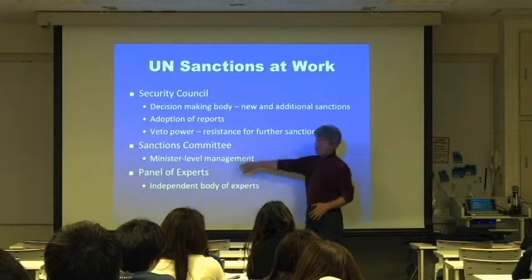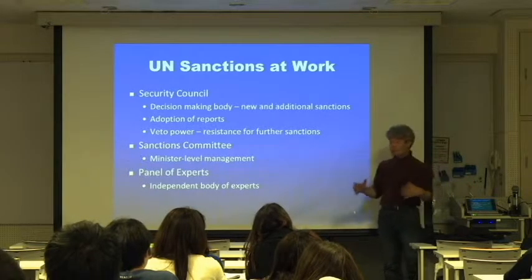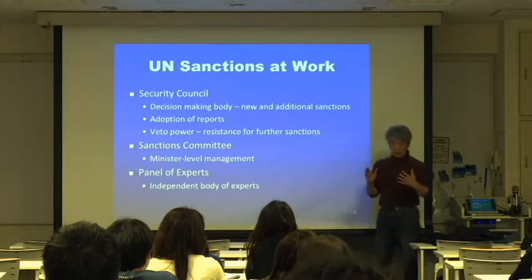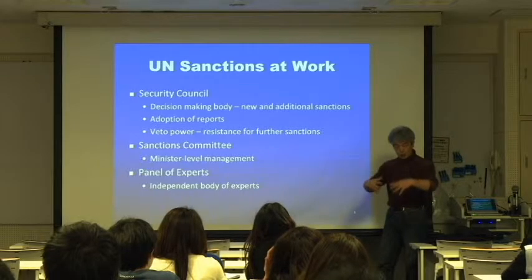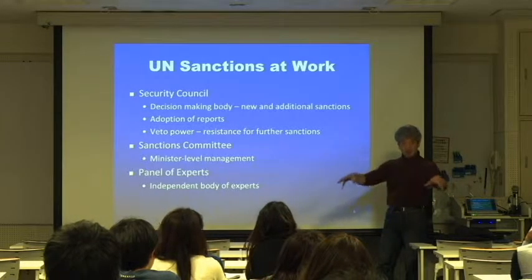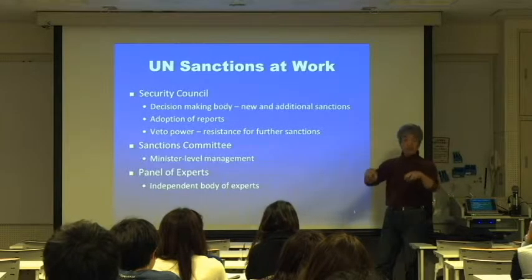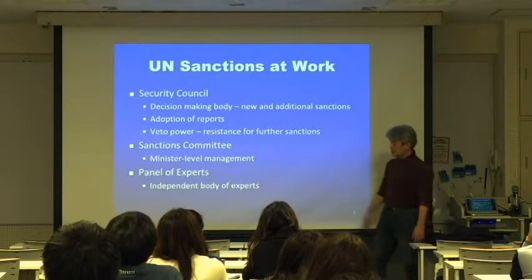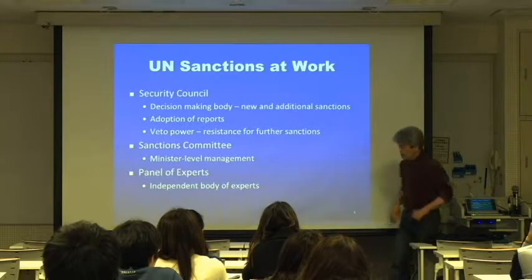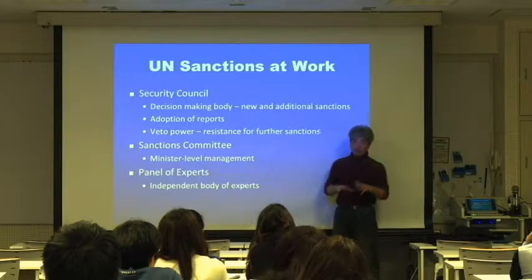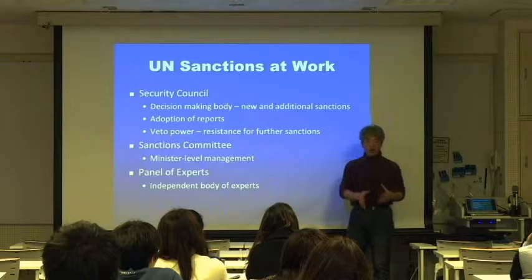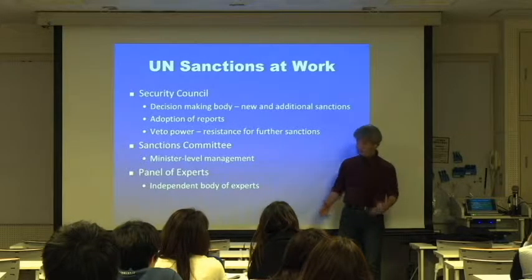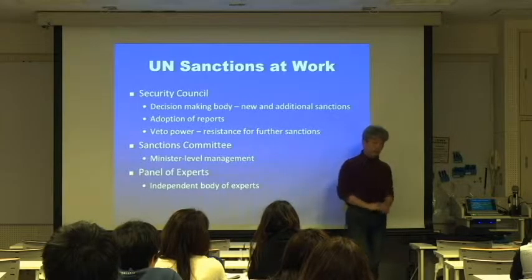Under the Security Council is the Sanctions Committee, a more technical group composed of the same 15 member states of the Security Council. These 15 members are mainly diplomats from permanent missions — like embassies — at a fairly middle level. They focus on legal and actual implementation issues of the sanctions and make the actual decisions. Usually once the sanctions committee approves, it is automatically approved by the Security Council.